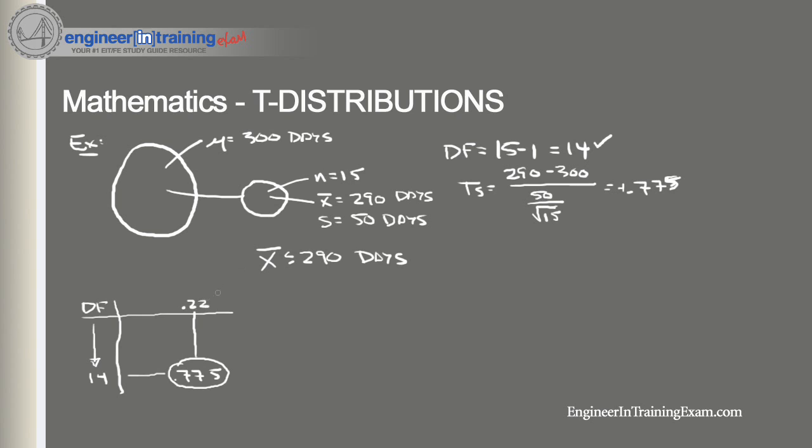So what that tells us is that if the company's claim is true, that the part life is 300 days, then there is a 22% chance that the average part life for 15 randomly selected parts would be less than or equal to 290 days.